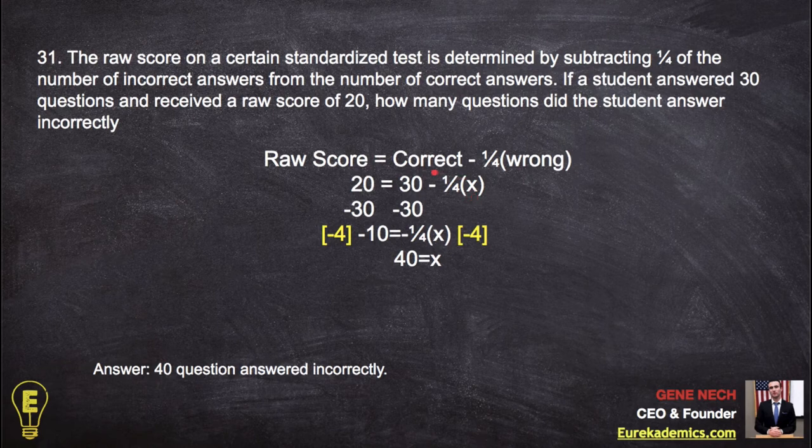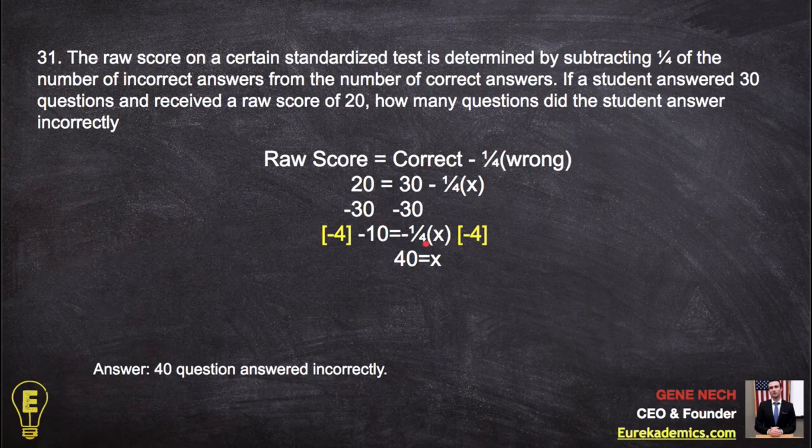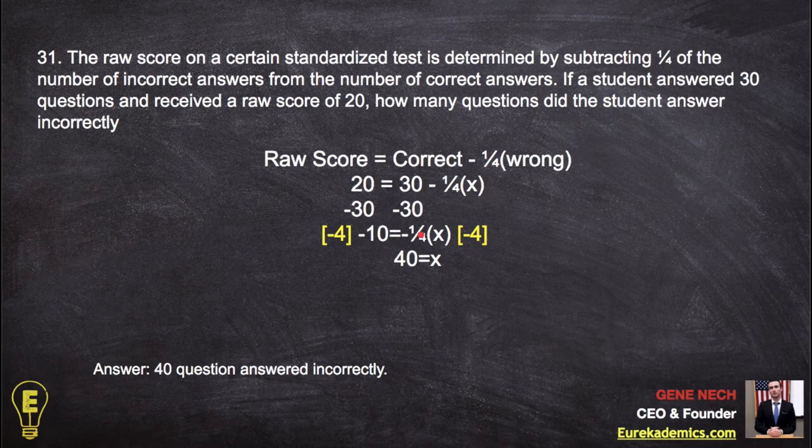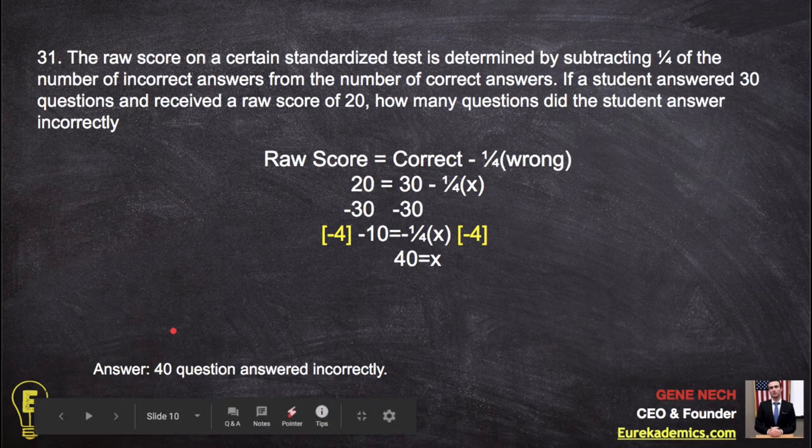To get rid of this low-hanging fruit algebra, minus 30, minus 30. We get negative 10 equals negative 1 fourth x. To get rid of this negative 1 fourth in front of x, we multiply it by negative 1 fourth. The negative times the negative makes it positive. Good. And 4 over 4 is 1. And we do that to the other side. So negative 4 times negative 10 is 40. Answer 40 questions incorrectly.